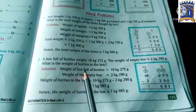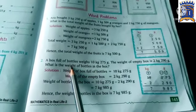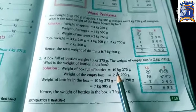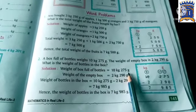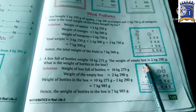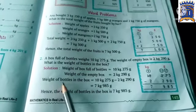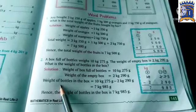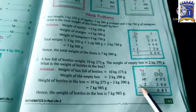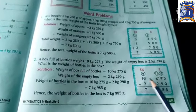So first we will say weight of the box full of bottles is 10 kg 275 grams. Weight of the empty box is 2 kg 290 grams. Now weight of bottles in the box, we will solve it like this.